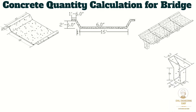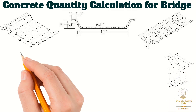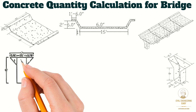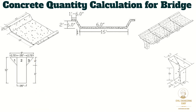Now calculate the volume of concrete for the Y-shaped column. Consider the front view of the Y column. We have divided the column into three portions, labeled 1, 2, and 3. We will find out the area of portions 1, 2, and 3, then add these areas and multiply by the thickness of the column, which will give us the total volume of a single column.